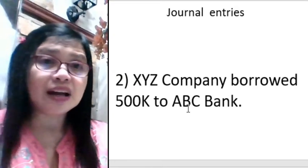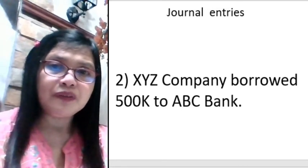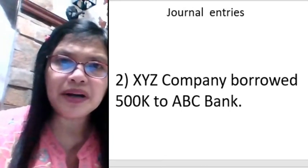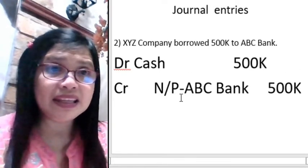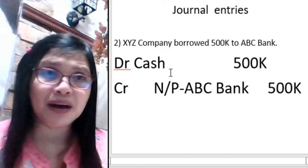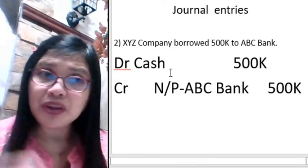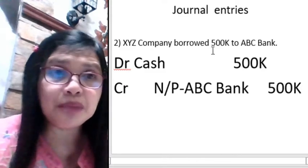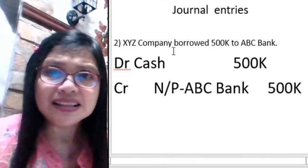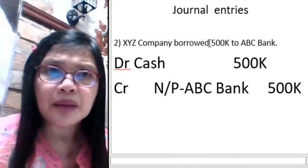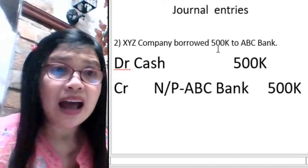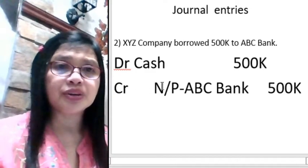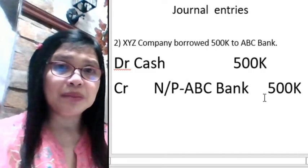XYZ borrowed 500,000 from ABC bank. When you borrow money from the bank, XYZ receives cash — so you debit cash 500,000. Since he borrowed money, that is a liability account, and a liability account has a credit balance. So you credit notes payable to ABC bank 500,000. Every time you borrow money from the bank, you have to sign a promissory note.